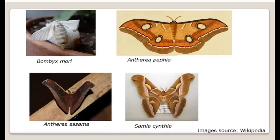Since the natural food of Bombyx mori is mulberry leaves, it is also called the mulberry silkworm. The silk produced by this moth is white in color.